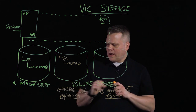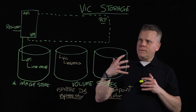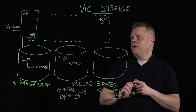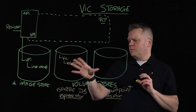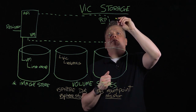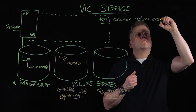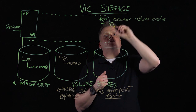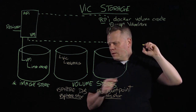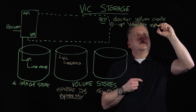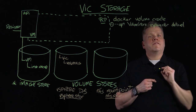Now that I've specified my image store and created two volume stores, let's switch to the persona of the Docker end user or developer who will be consuming this via the Docker API. The first thing I need to do is create a volume on these newly created volume stores. To do that, I use the 'docker volume create' command and create two volumes. For the first one, I use the option '--volume-store=vSphere store' to create a volume on the vSphere datastore, and I'll call it 'data vol.'